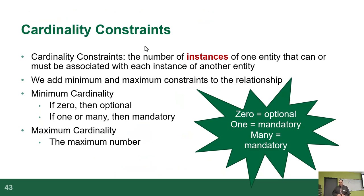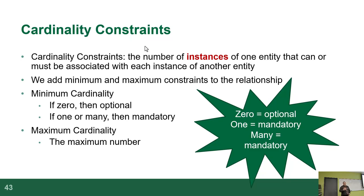Cardinality constraints define the number of instances that one entity can be associated with another instance of another entity. We always add a minimum and maximum number to the cardinality. The minimum is either zero or one: zero means it's optional, one means it's mandatory. For example, as a professor, when they assign me a course, I actually have zero students — they give me the course and then load the students in later.